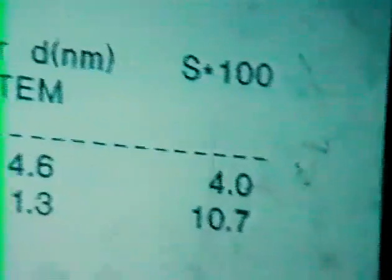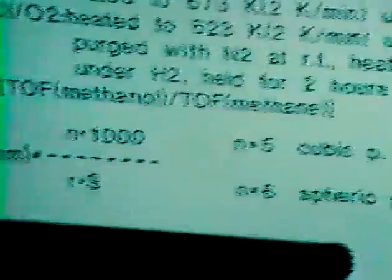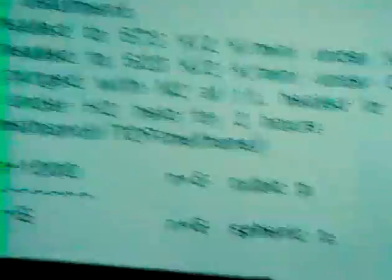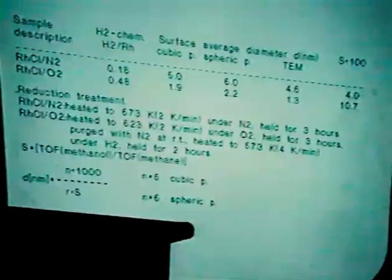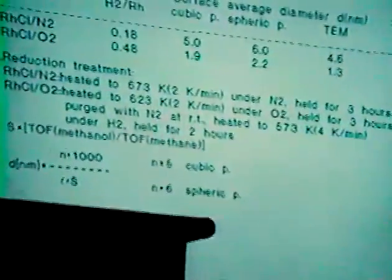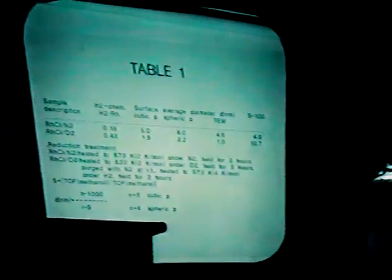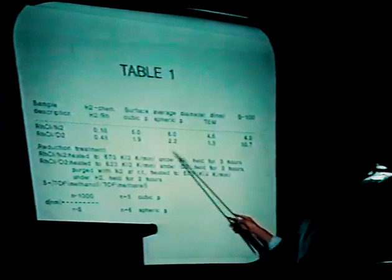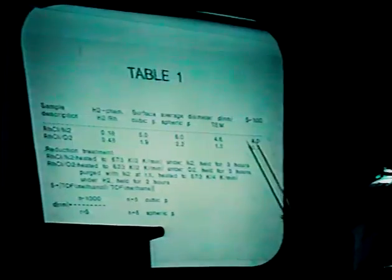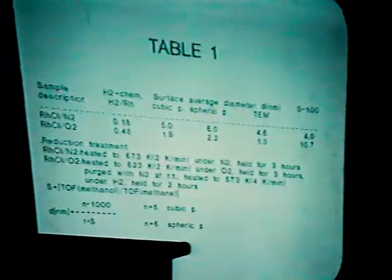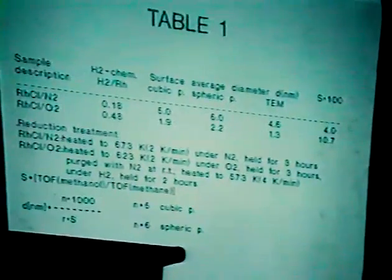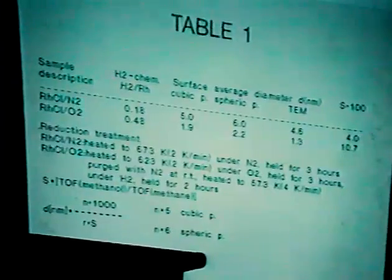Here you can see the results: the selectivity of methanol formation, defined by this equation—the turnover frequency of methanol formation to the turnover frequency of methane formation—for the large rhodium particles and the small rhodium particles. You can see the average particle size estimated from TEM and calculated from hydrogen chemisorption, and there is a fairly good agreement between these two methods.